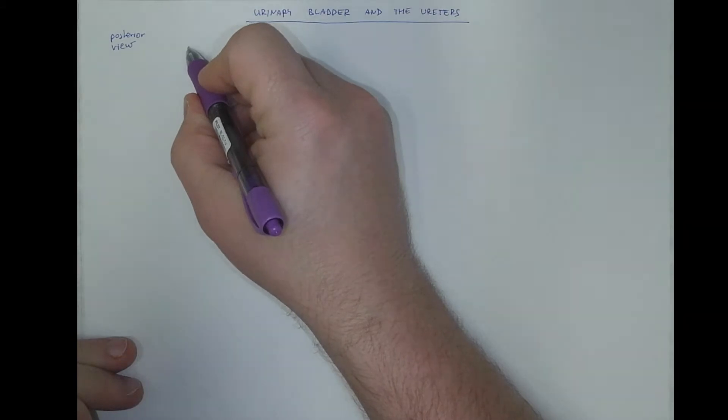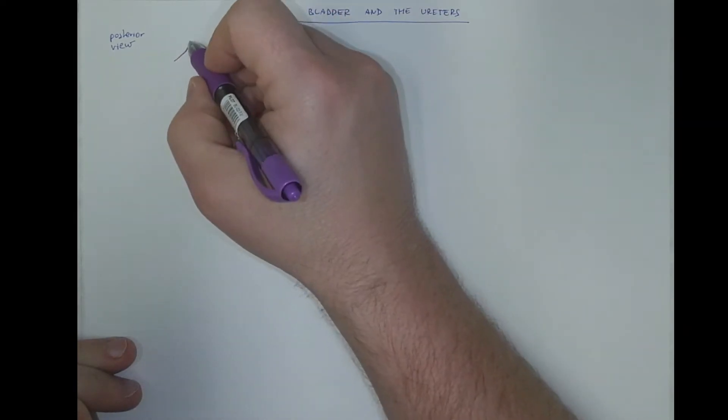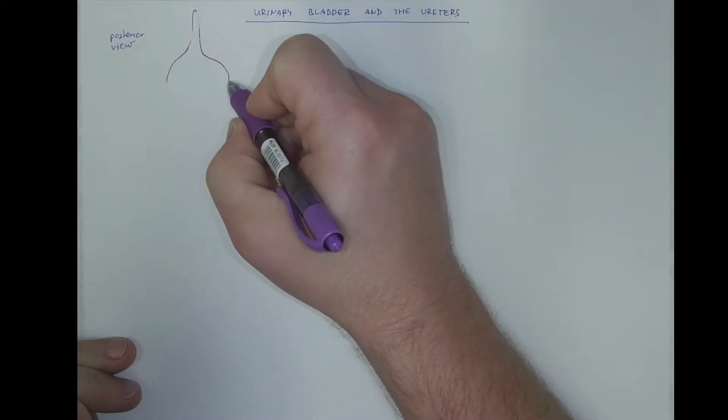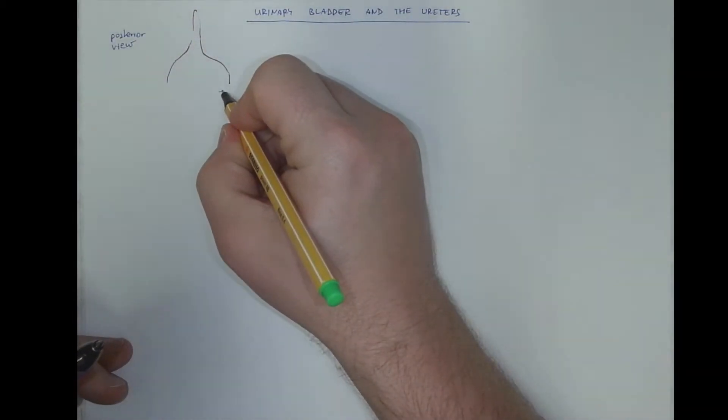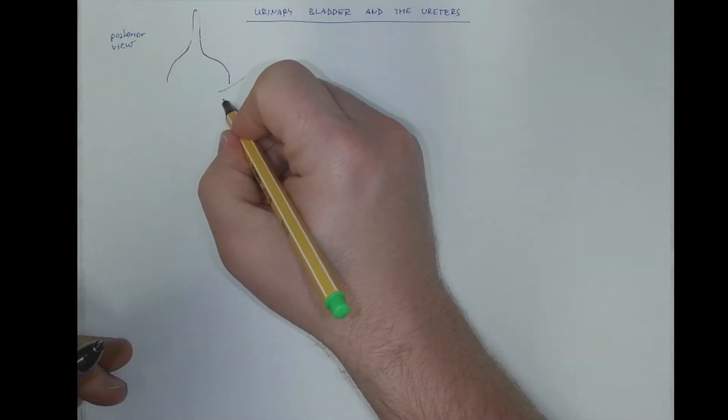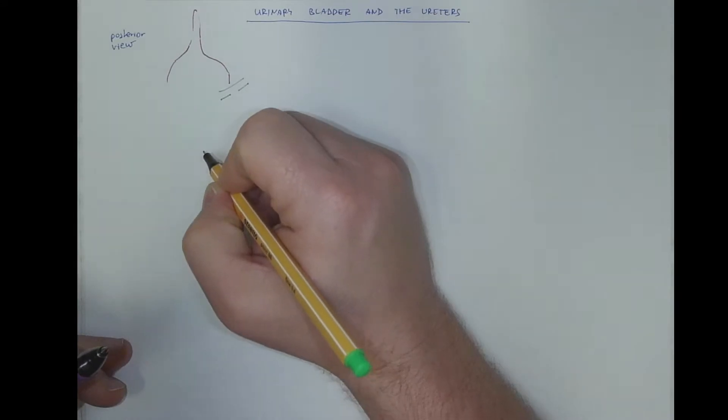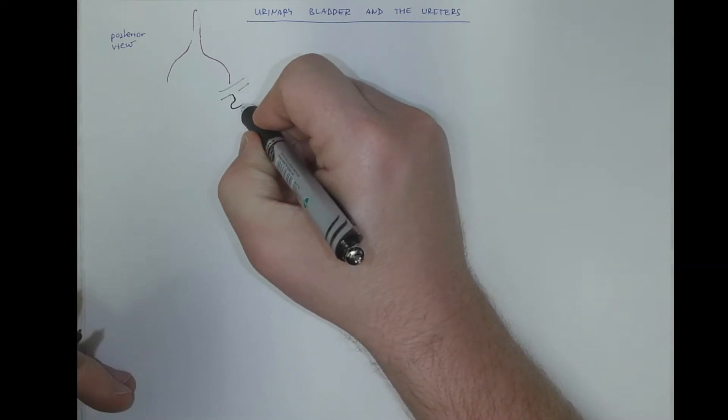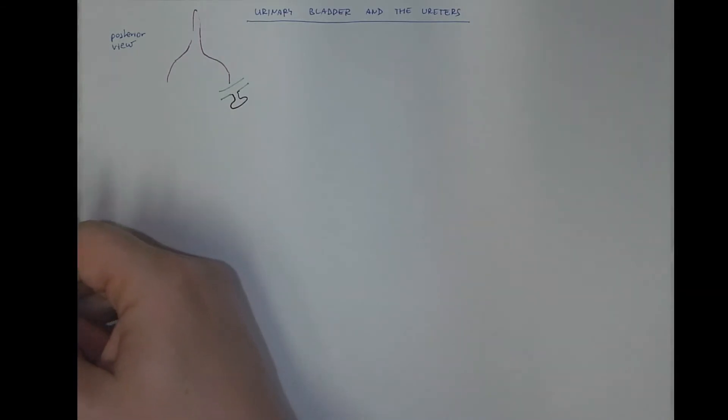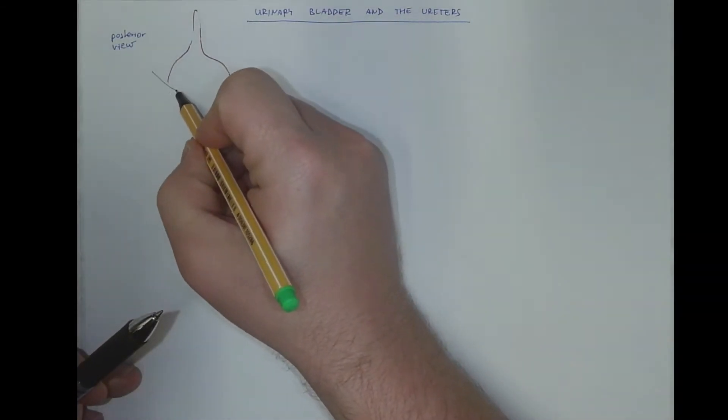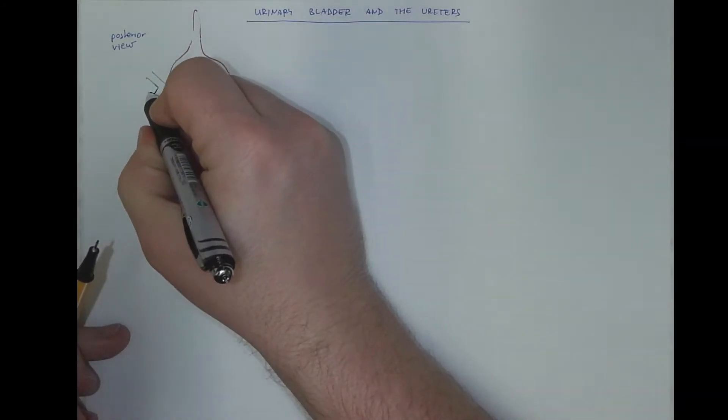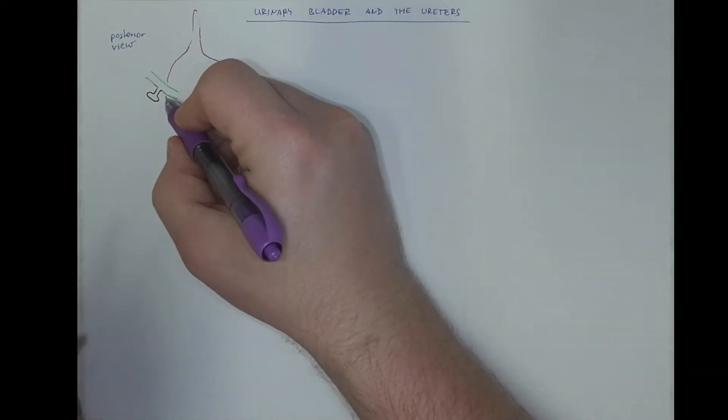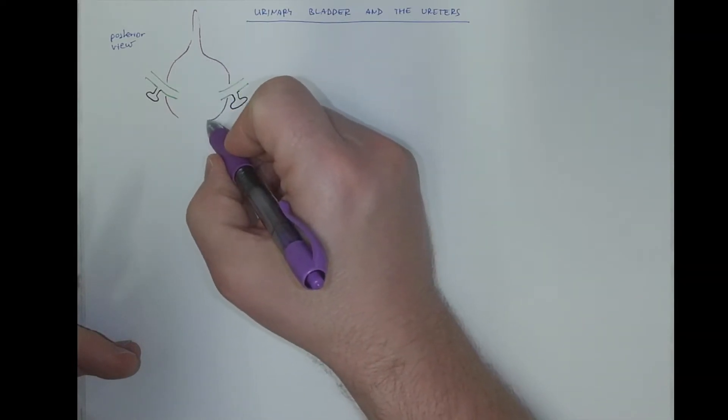We would see the urogenital sinus with the allantois, then the mesonephric duct joining laterally and dorsally the wall of the urogenital sinus. The ureteric bud, I will use different color for this because these will become independent later on, so we could still track the structures. So the mesonephric duct, the ureteric bud and the rest of the urogenital sinus, the superior part, the inferior part.